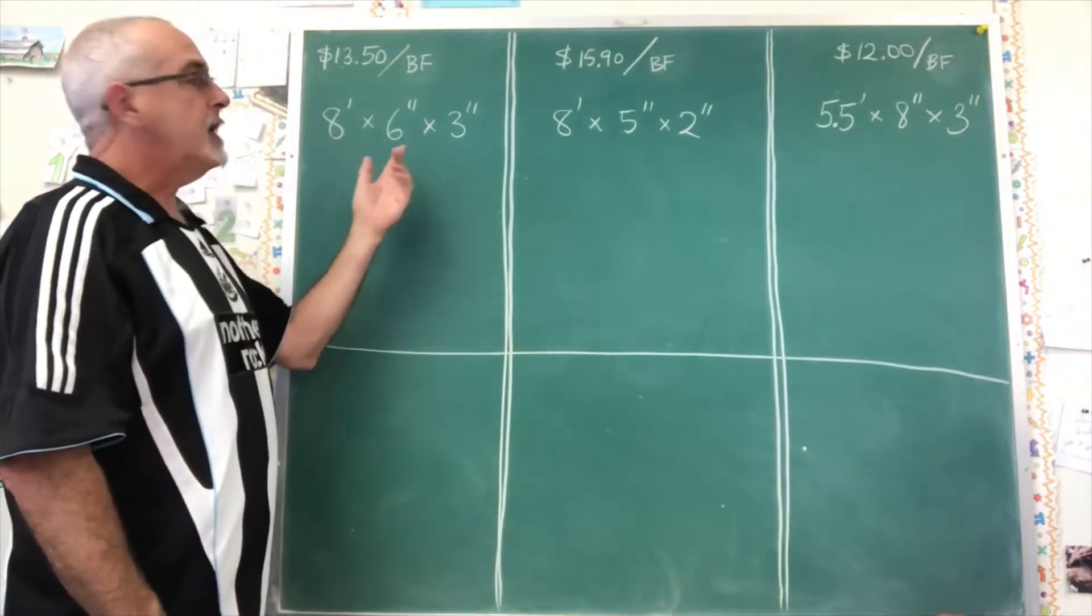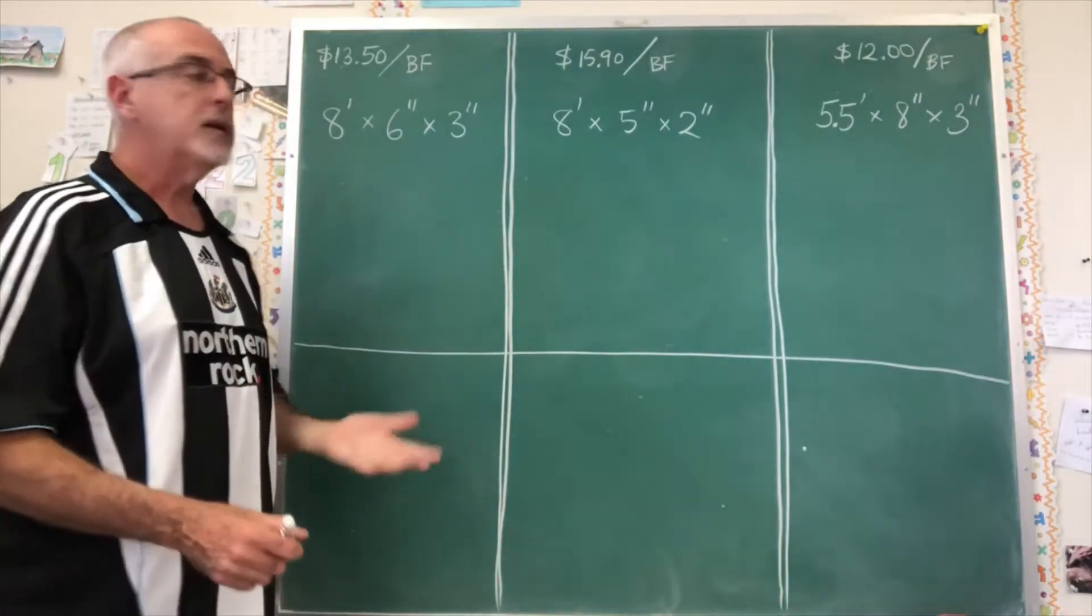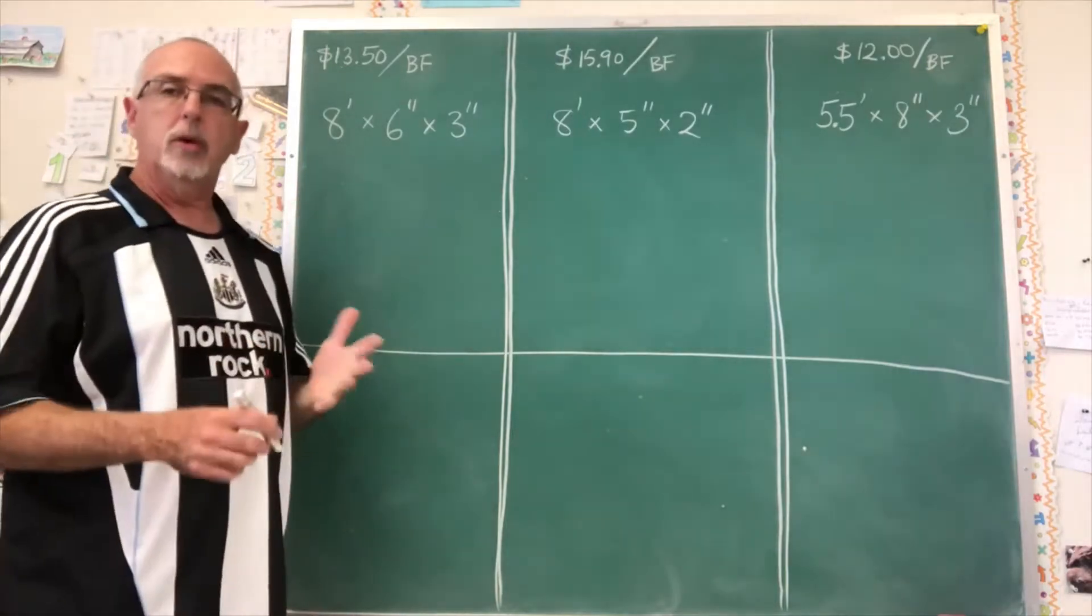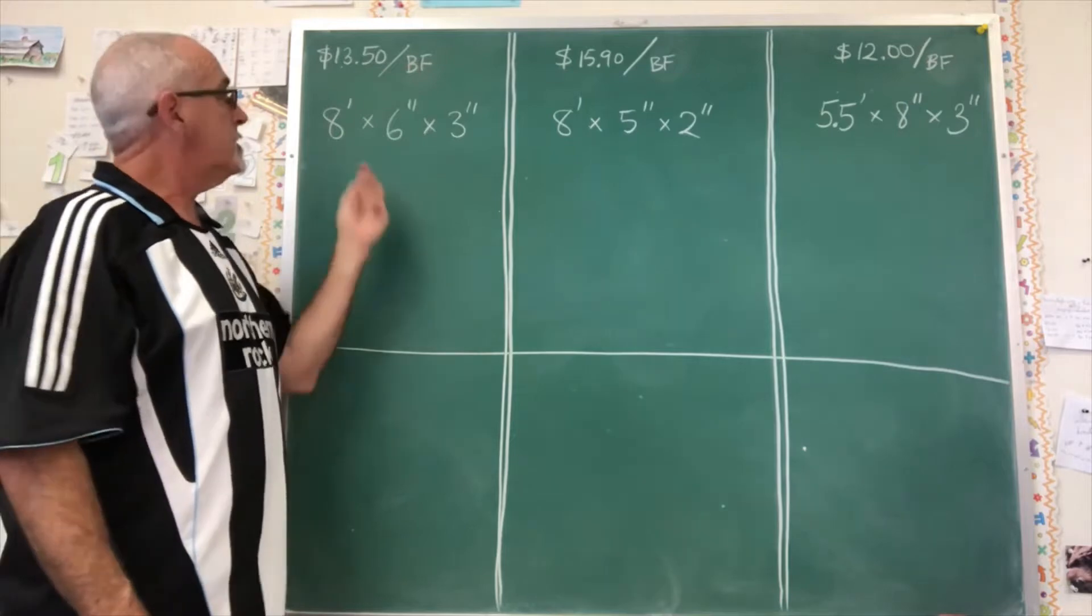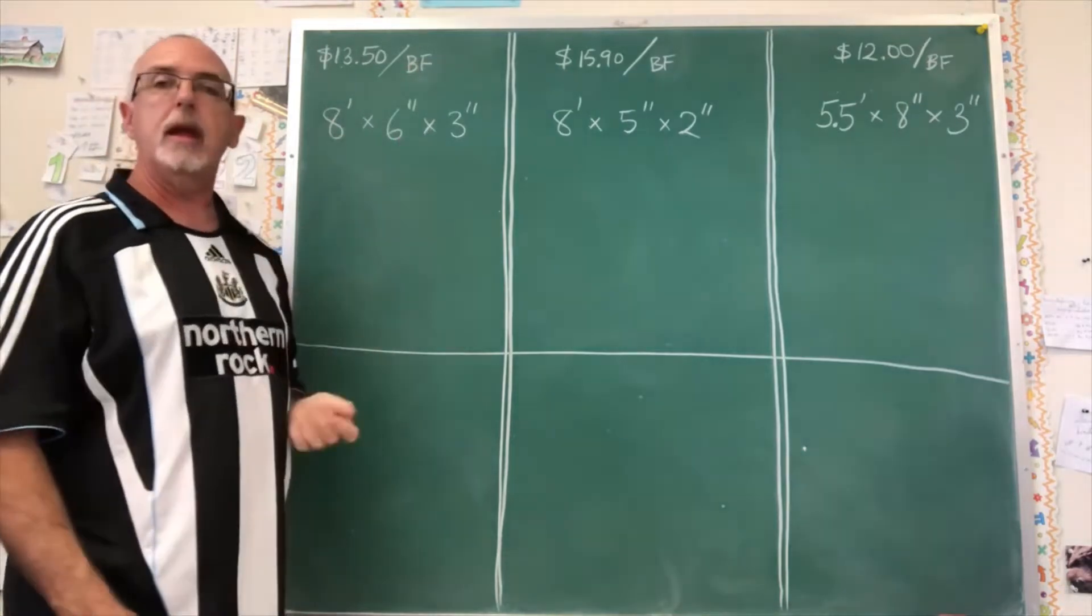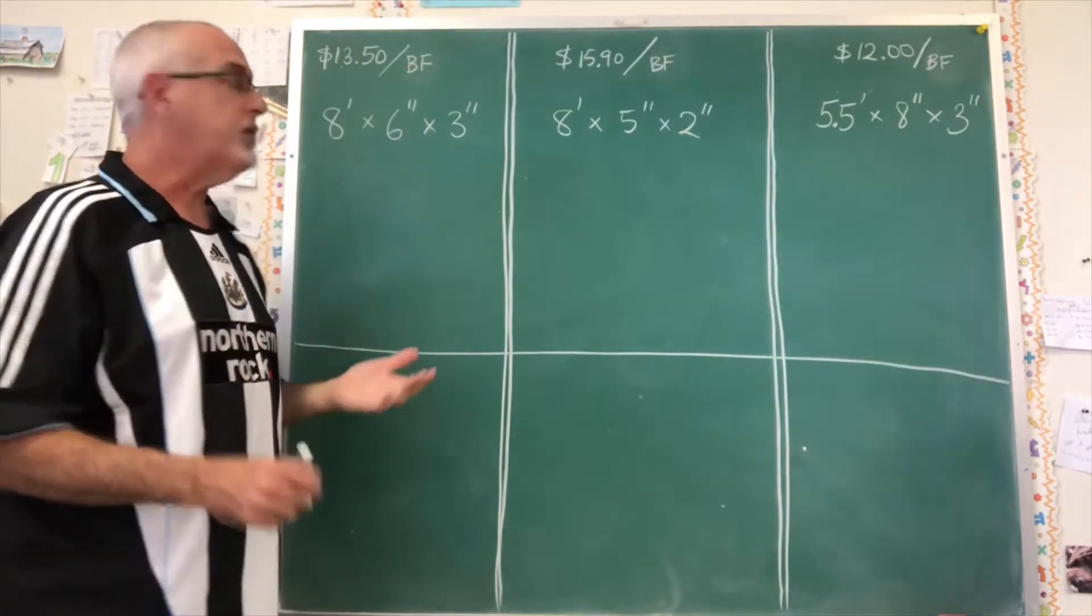To calculate how much something is going to cost that's sold by the board foot, you need to know the cost per board foot. You also need to know the length, the width, and the thickness of the piece of wood.